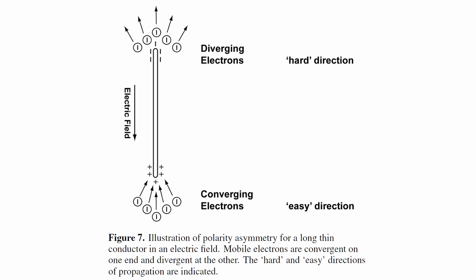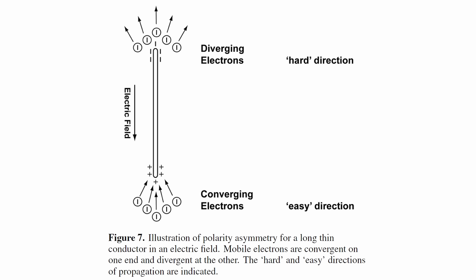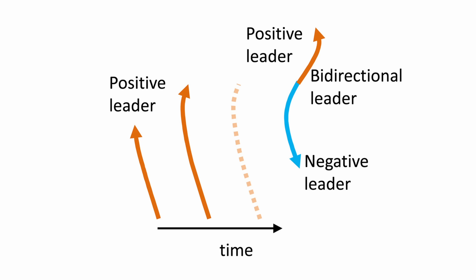Strikingly, positive recoil leaders have never been observed, posing a profound mystery despite seemingly similar conditions for negative and positive breakdown at the cut-off process's end. One plausible explanation suggests that recoil leaders are also bi-directional dischargers, featuring a smooth-progressing radio-frequency-quiet positive end and an erratic noisy negative end.